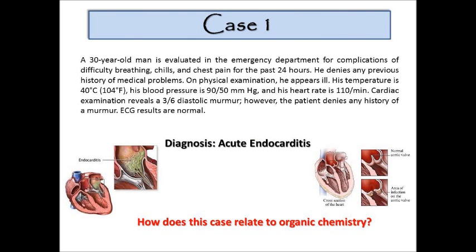So we may as well jump right in. This is how the class is going to be presented. In this case, a 30-year-old man is evaluated in the emergency department for complications of difficulty breathing, chills, and chest pain for the past 24 hours. He denies any previous history of medical problems. On physical examination he appears ill. His temperature is 40°C (104°F), blood pressure is 90/50, heart rate is 110 per minute. Cardiac examination reveals a 3/6 diastolic murmur, though the patient denies any history of a murmur. ECG results are normal.